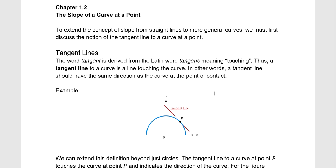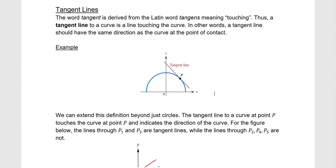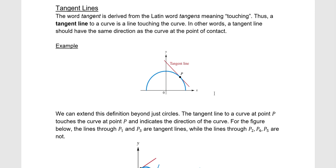Before we do that, we have to talk about what a tangent line to a curve is at a point. Starting with tangent lines — tangent is from Latin for 'tangens' and it means touching. A tangent line to a curve is the line touching the curve at one point and should have the same direction as the curve at the point of contact. Same direction — that's very important.